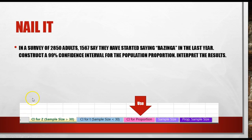Let's look at this next question. It says, in a survey of 2,850 adults, 1,567 say they have started saying bazinga in the last year. Construct a 99% confidence interval for the population proportion. Interpret the results.